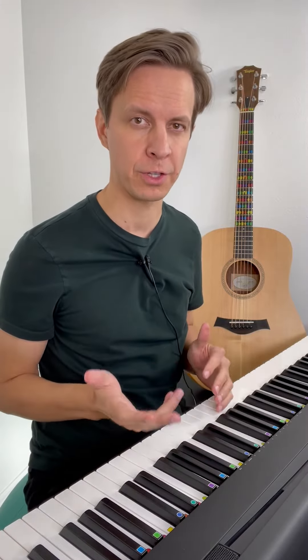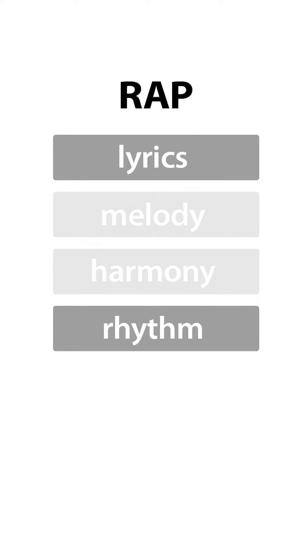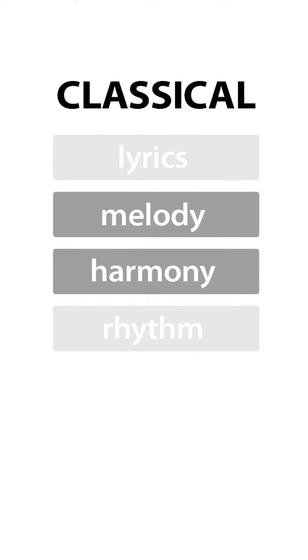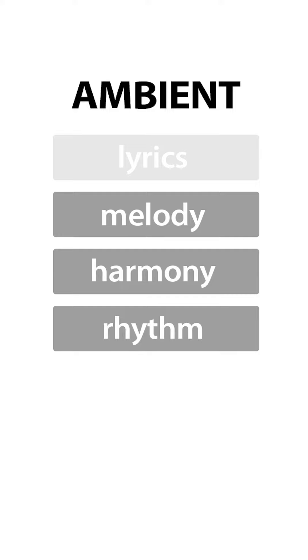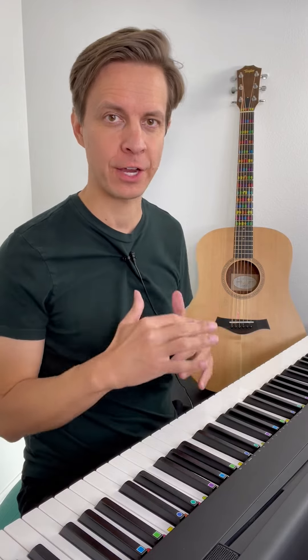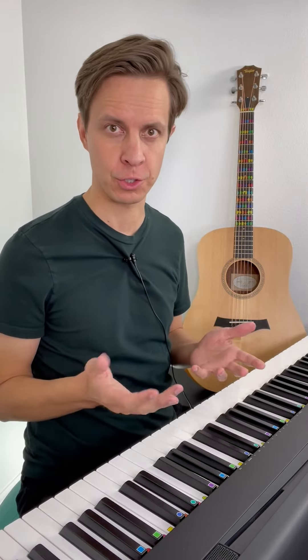Sometimes a song might emphasize only some of these layers, like rap, for example, may focus on the lyrics and the rhythm, while classical music may highlight the melody and the harmony, and new age ambient might delve into the rhythm, harmony, and melody without any lyrics at all. So you can combine these layers in different ways to create different sounds, which is cool.